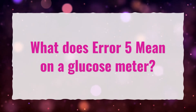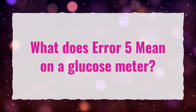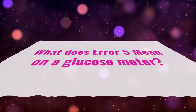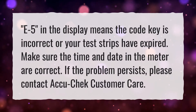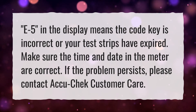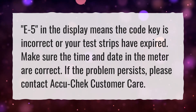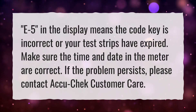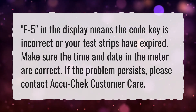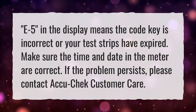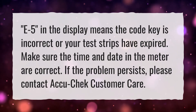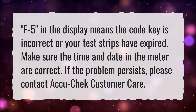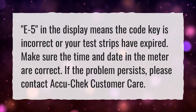What does ERROR 5 mean on a glucose meter? E5 in the display means the code key is incorrect or your test strips have expired. Make sure the time and date in the meter are correct. If the problem persists, please contact AccuCheck Customer Care.